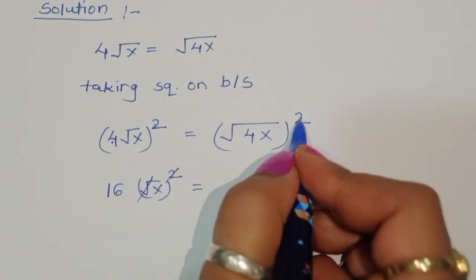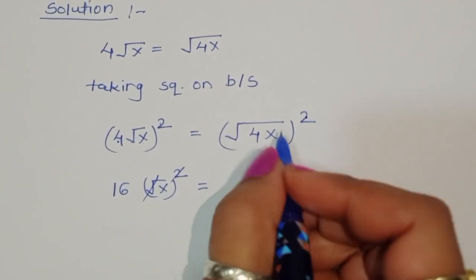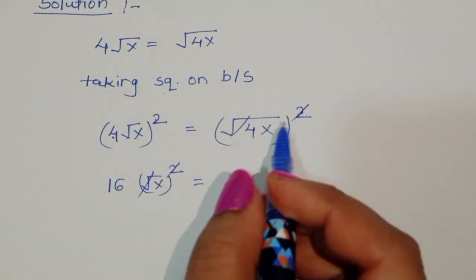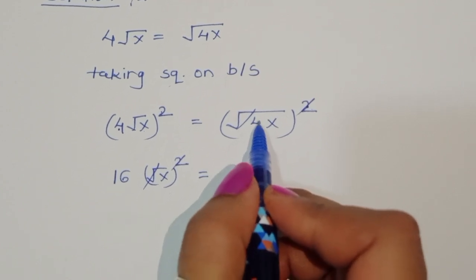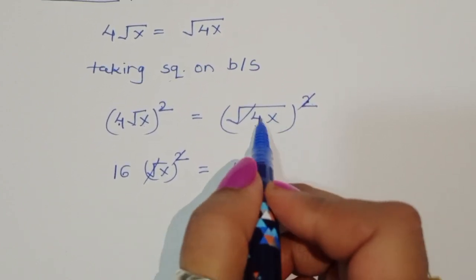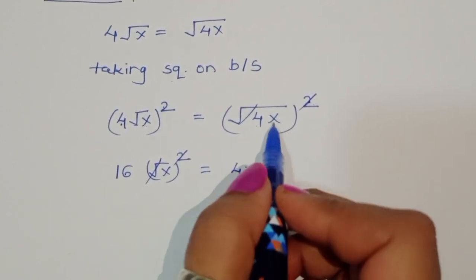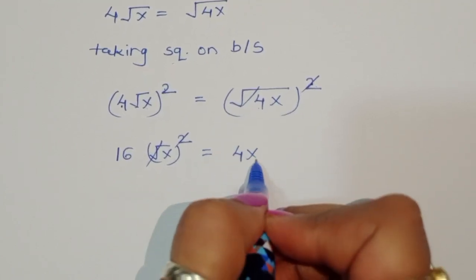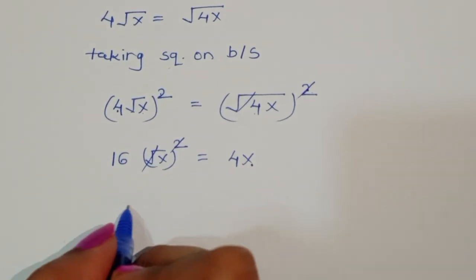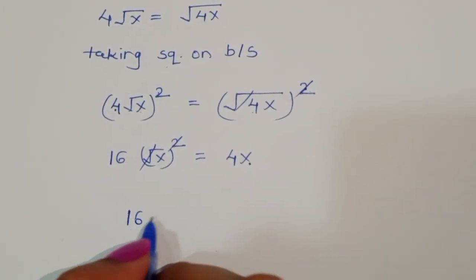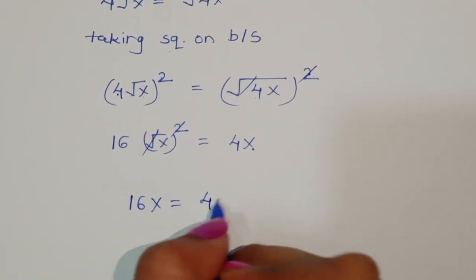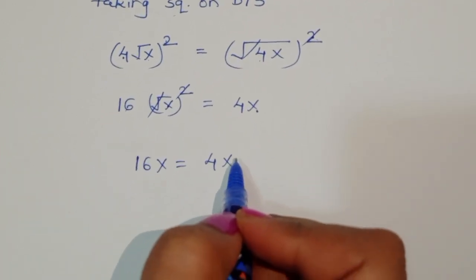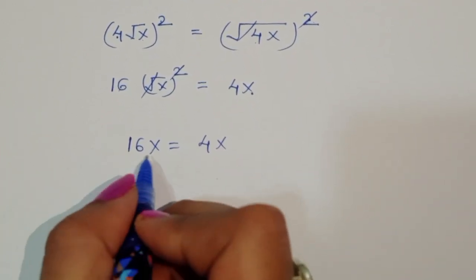The square cancels the square root, so we can write: 16 times x is equal to 4x. That gives us 16x is equal to 4x.